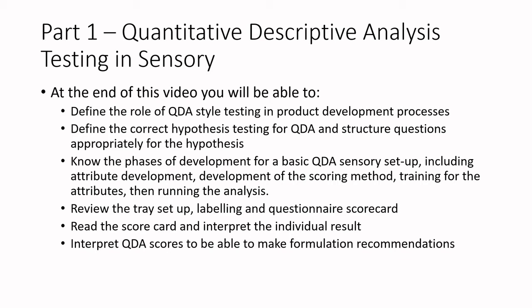At the end of this video, you'll be able to define the role of QDA — quantitative descriptive analysis — and talk about this style of testing in product development processes. We'll define the correct hypothesis testing for QDA, know the phases of development for a basic QDA sensory setup including attribute development, development of a scoring method, training for the attributes, and then running the analysis. We'll also review the trace setup, labeling a questionnaire scorecard, reading the scorecard, and interpreting individual results.